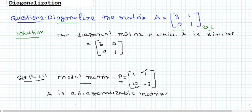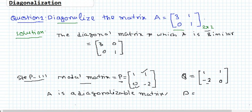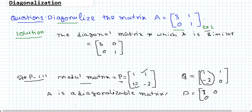So here is the modal matrix. If we change the order of the modal matrix - suppose we take another modal matrix where the first column is eigenvector [1, -2] and the second column is [1, 0] - then the diagonal matrix will change accordingly. The first principal diagonal entry will be the eigenvalue corresponding to the first eigenvector column, and the second diagonal entry will correspond to the second column. So D = [[1, 0], [0, 3]].